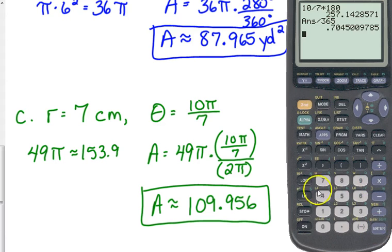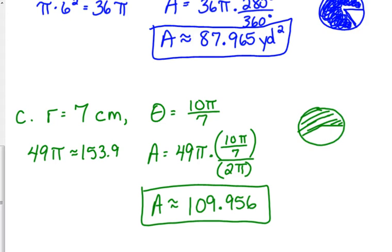Hang on, let me convert 10 pi over 7 to degrees. Why did I divide? 10 over 7 times 180 divided by 360 times 49. Okay, that's right. Yep, that's right. All right.